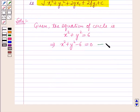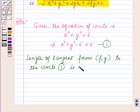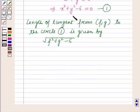Let us name this equation 1. So the length of the tangent from the point (f, g) to the circle whose equation is given as equation 1 is given by the square root of f² + g² − 6. Here we have substituted the value of x as f and the value of y as g.